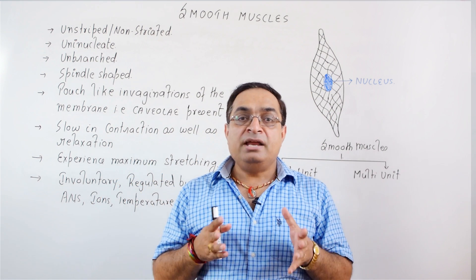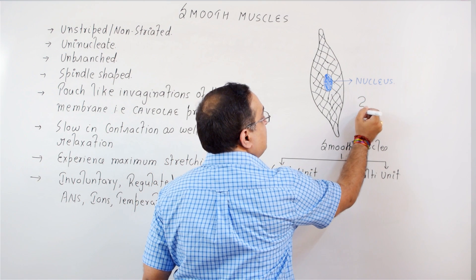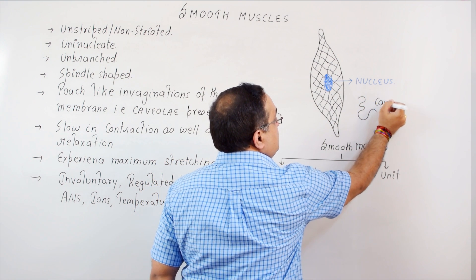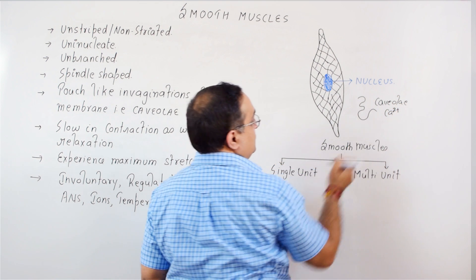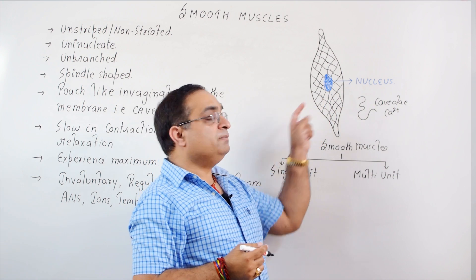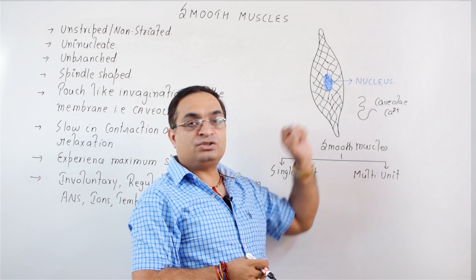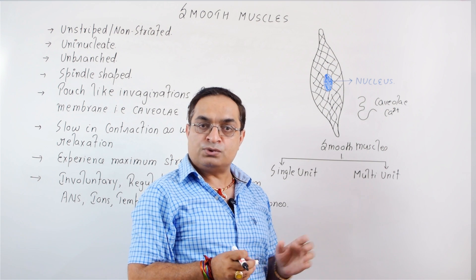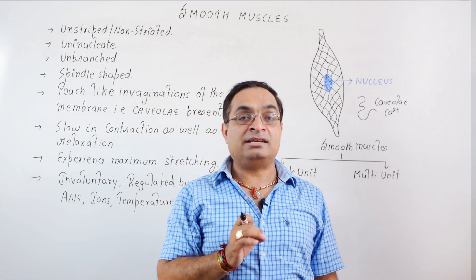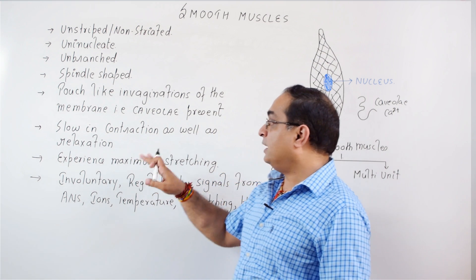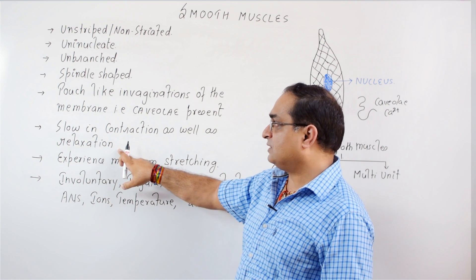The membrane of the smooth muscle has pouch-like invaginations called caveolae, which store calcium ions. The entry of calcium into the smooth muscle fibers is slow and the exit of calcium is also slow. That's why smooth muscle fibers are slow in their contraction as well as relaxation.